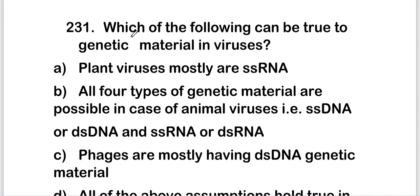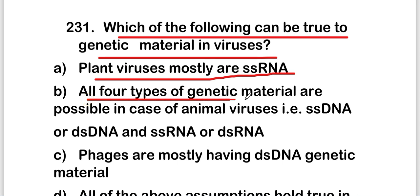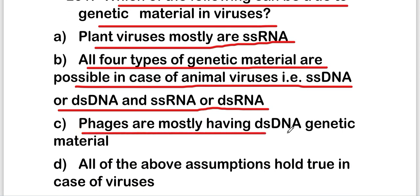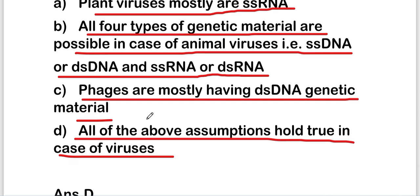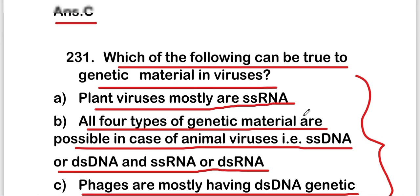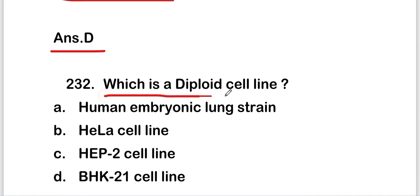The next question: which of the following is true about genetic material in viruses? Options: plant viruses are mostly single-stranded RNA; all four types of genetic material are possible in animal viruses (ssDNA, dsDNA, ssRNA, dsRNA); phages are mostly having double-stranded genetic material; or all of the above. The answer is option D — all three options are correct about the genetic material in viruses.